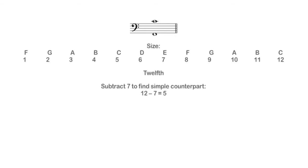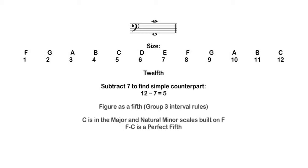In this interval, F to C: counting all the letter names between them, this is a twelfth. Subtract 7 from 12 and you end up with 5 — a fifth is the simple counterpart to a twelfth. Fifths are Group 3 intervals, meaning they can be perfect, augmented, or diminished. C shows up in both the major and minor scale built on F, so this is a perfect fifth, and when we add the octave back by adding 7, we end up with a perfect twelfth.